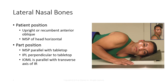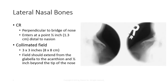For the lateral nasal bones, position the patient upright or recumbent in the anterior oblique position. The MSP of the head should be horizontal in the recumbent position and parallel with the tabletop. Keep the IPL perpendicular to the tabletop, and the IOML should be parallel with the transverse axis of the IR. The CR should enter perpendicular to the bridge of the nose at a point 1.5 inches distal to the nasion. Collimate to a field size of 3x3 inches.